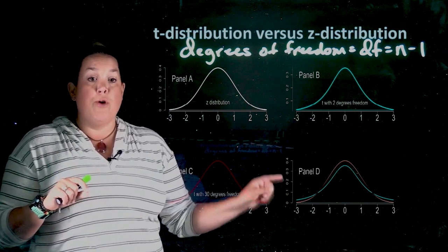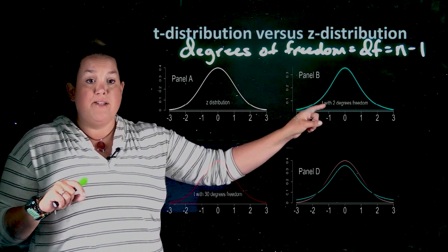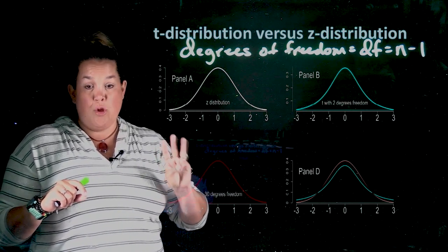Now, the other thing that you will notice, that was panel B. So the two degrees of freedom, which means the sample size is only three.